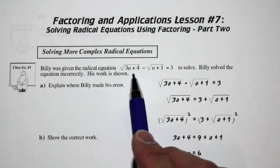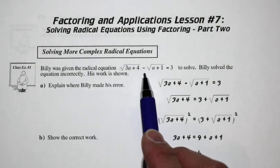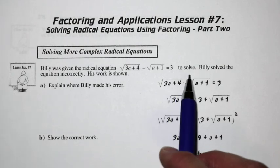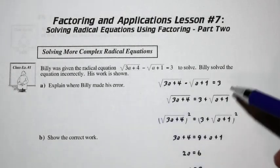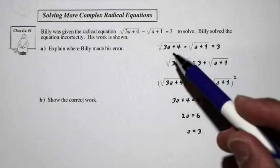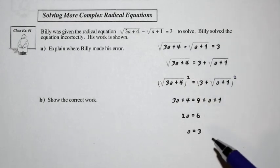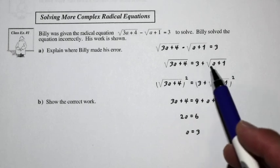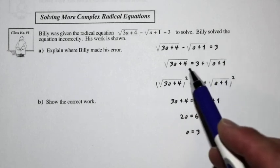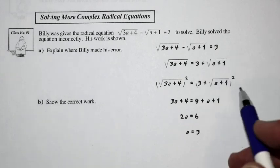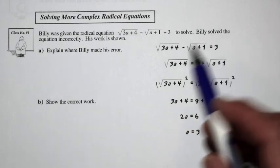Say Billy was given a radical equation: square root of 3a plus 4, minus the square root of a plus 1, is equal to 3, and he was told to solve it. He solves it and here is his work. He made an error somewhere, and we're going to try and find Billy's error so that when we check our work, we might be able to avoid making the same error.